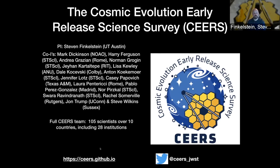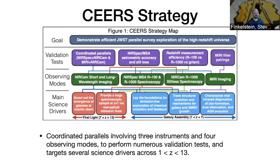I'm going to show you figure one from the proposal, which was our strategy map, which motivates the observational and science strategy we came up with. The overall single-line goal of CEERS is to demonstrate efficient JWST parallel survey exploration of the high-redshift universe. We basically wanted to show how you could do an efficient blank-field survey for galaxy evolution from redshift 0.1 to however high we can go, using two instruments at once.